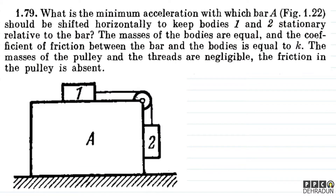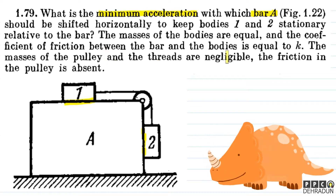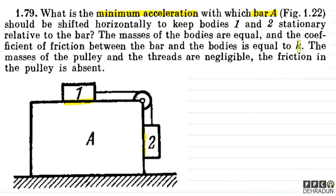So the question is basically: what is the minimum acceleration of bar A such that bodies 1 and 2 remain stationary relative to the bar? The coefficient of friction between the bar and the bodies is K. Let's say the acceleration is small 'a', towards the right. We expect block 1 and block 2 to also have acceleration 'a' in the right direction.